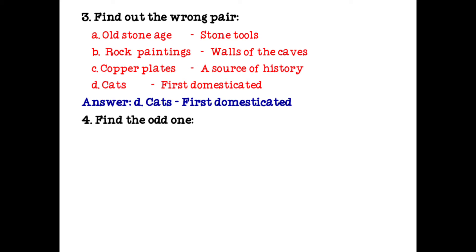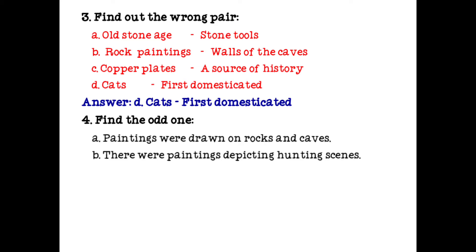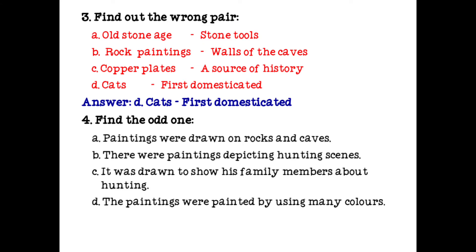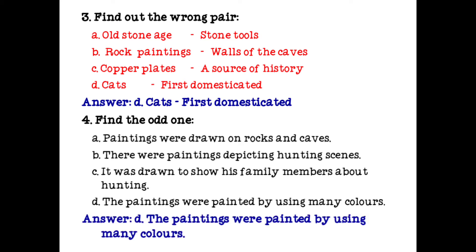Find the odd one out. Option A: paintings were drawn on caves and rocks. There were paintings depicting hunting scenes drawn to show family members about hunting. The odd one is that the paintings were painted using many colors, because in the prehistoric age there were not many colors. This is the wrong statement and the odd one among the four.